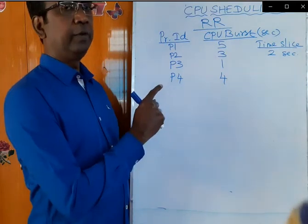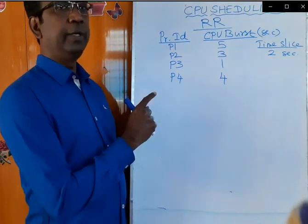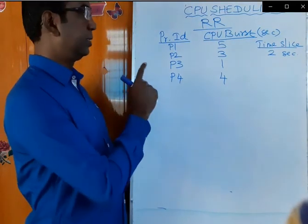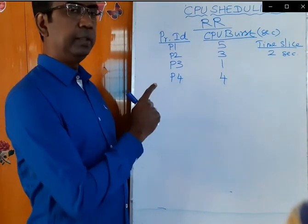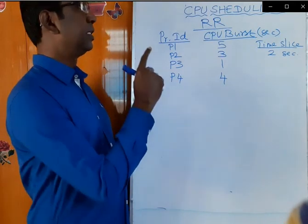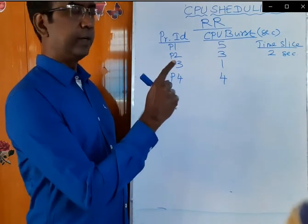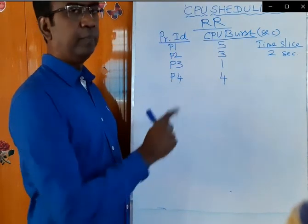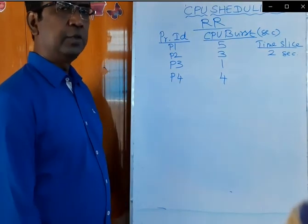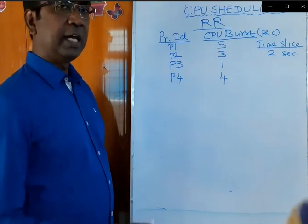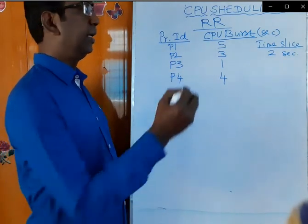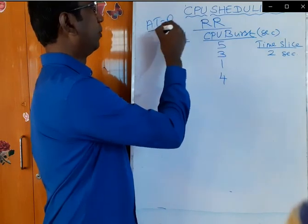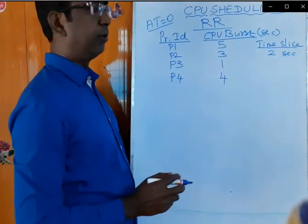We are going to discuss round-robin scheduling. Consider this situation: there are four processes, P1, P2, P3, and P4. The CPU burst time for P1 is 5 seconds, P2 is 3 seconds, P3 is 1 second, and P4 is 4 seconds. Assume all four processes arrive at time 0, so the arrival time is equal to 0 for all.